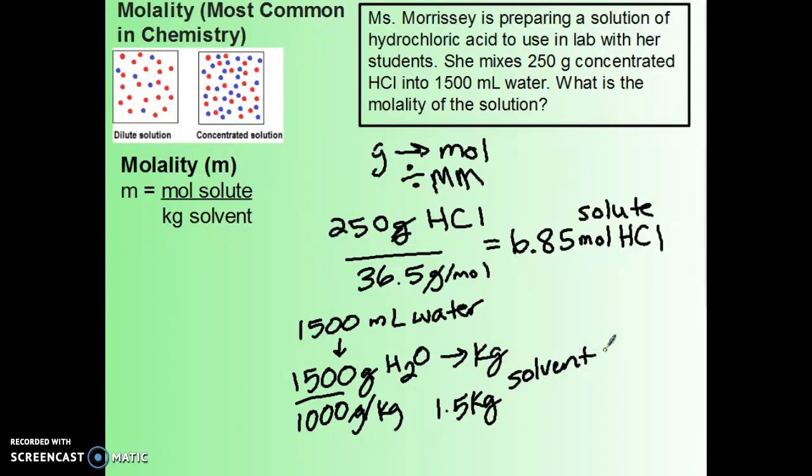So if I want to calculate the molality, all I have to do is plug in my solute into the numerator and my solvent into the denominator. So M equals 6.85 moles of HCl over my 1.5 kilogram of water. And that will give me 6.85 divided by 1.5, which is 4.6.